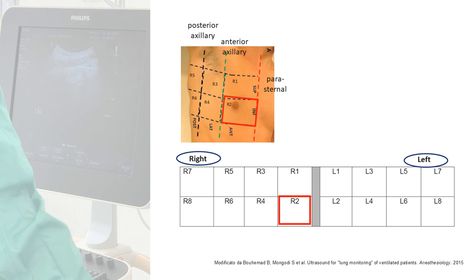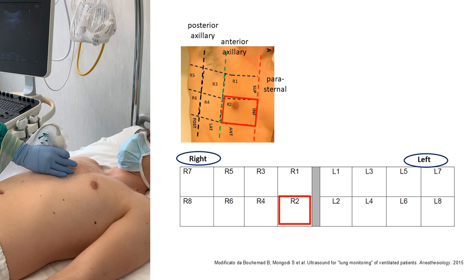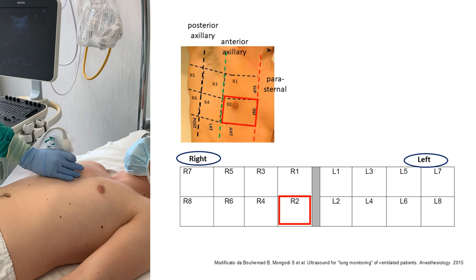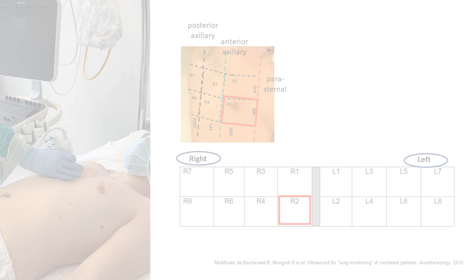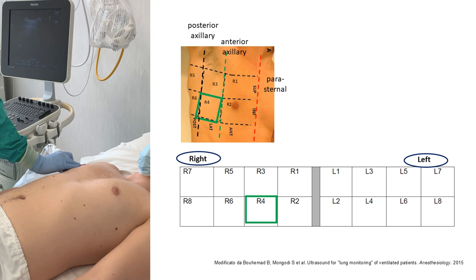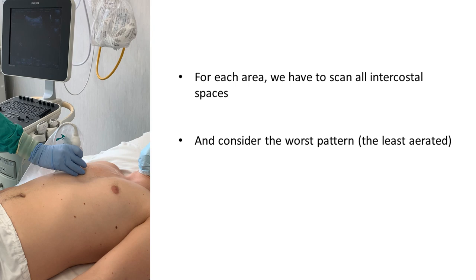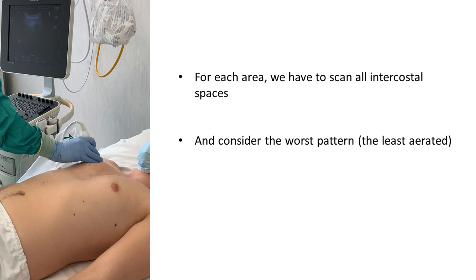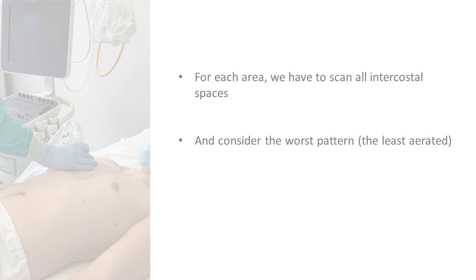We then move to the right anterior thorax lower part. If we record a clip, it should last at least a full respiratory cycle, possibly 5 to 6 seconds. Let's go on to the right lateral thorax, first the upper part and then the lower part. For each area, it is advisable to scan all intercostal spaces, considering the worst pattern — that is, the least aerated one.